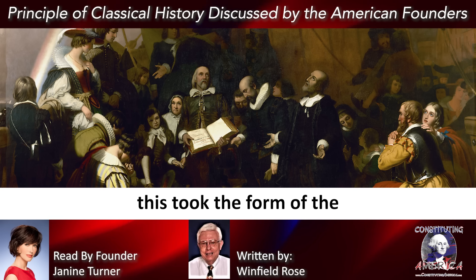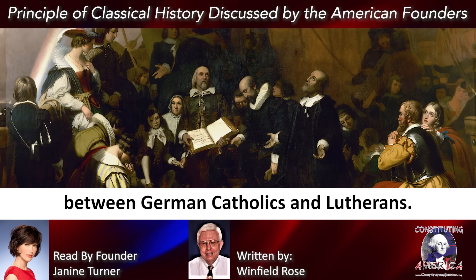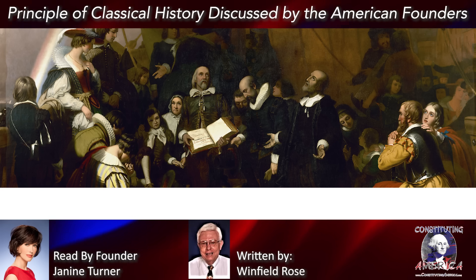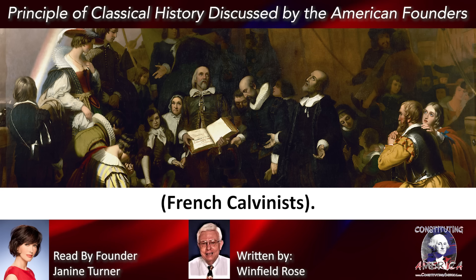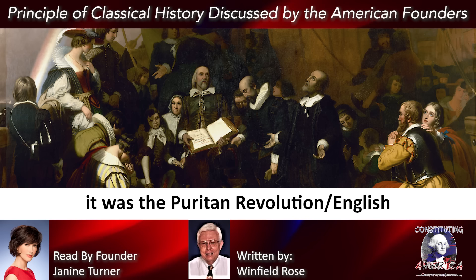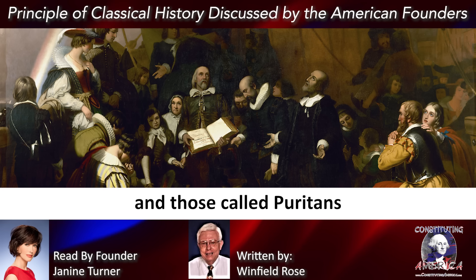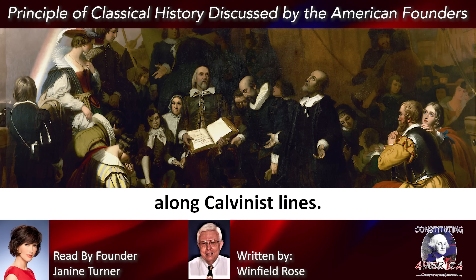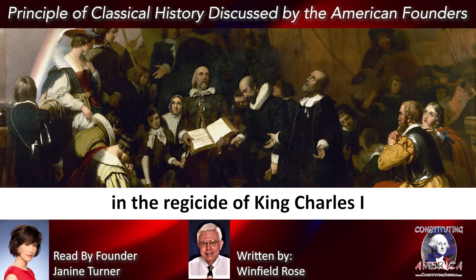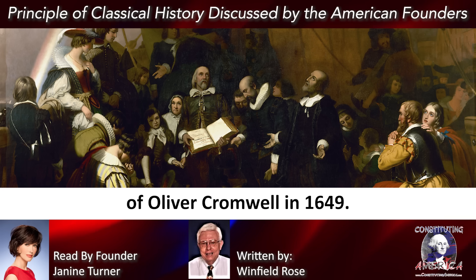On the continent, this took the form of the Thirty Years' War (1618–1648) between German Catholics and Lutherans. There were religious civil wars in France between Catholics and Huguenots, French Calvinists. In England, it was the Puritan Revolution, English Civil War (1640–1649), between Anglicans and those called Puritans, who wanted to reform the Church of England along Calvinist lines. This resulted in the regicide of King Charles I and the establishment of the Protectorate of Oliver Cromwell in 1649.